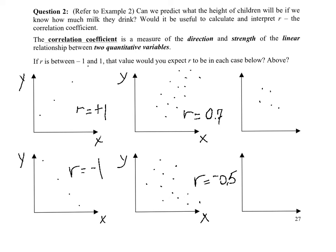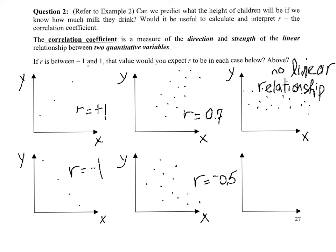What would r be for a scatter plot that looks like this? The r would be neither negative 1 nor positive 1. If I was to put a line through this data, the line would be very flat — the relationship wouldn't be positive or negative, and it would be very weak. In this case there is no linear relationship, and if we were to calculate r, we'd probably get 0.